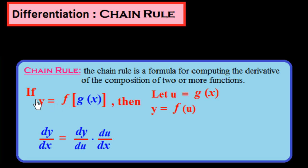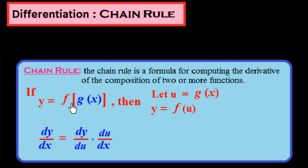Let me explain this first. If y is equal to f of g of x, it is a composite function. Here, g of x is the sub-function of f of x. What we will do is assume the sub-function as u, so u is equal to g of x. Then we find y is equal to f of u.